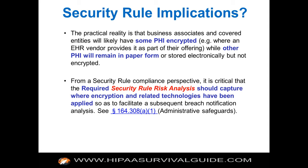At this point you have determined there has been an impermissible use or disclosure of unsecured PHI, so you're ready to go on to the second step of the analytical framework: what are the exceptions? There are three.